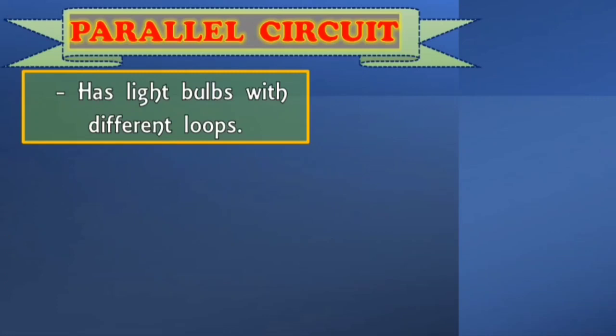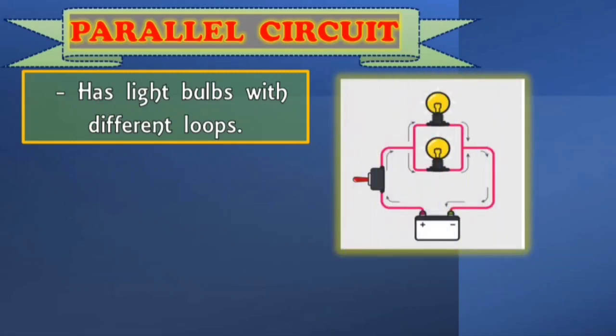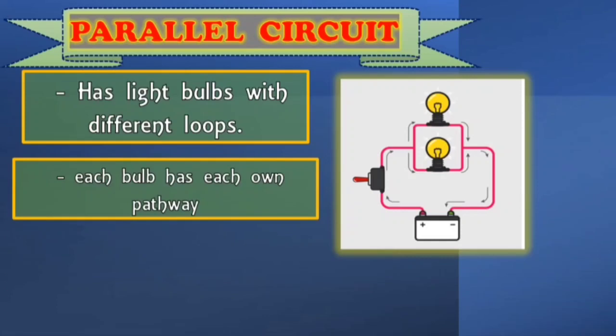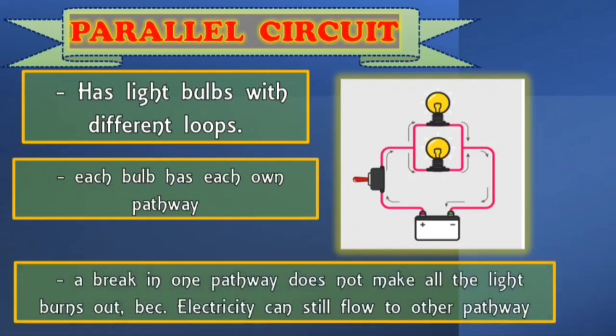On the other hand, a parallel circuit has light bulbs with different loops, just like in this illustration. As you can see, each bulb has its own pathway. So in other words, each load or bulb is part of a different circuit. Therefore, a break in one pathway does not make all the lights burn out because electricity can still flow to other pathways. Ibig sabihin, kahit masira yung isang load or yung isang bulb, maglalighten up pa rin yung isa. Kasi they can still flow electricity because magkaiba naman sila ng pathway na dinadaanan.